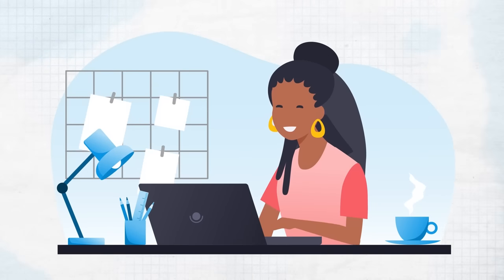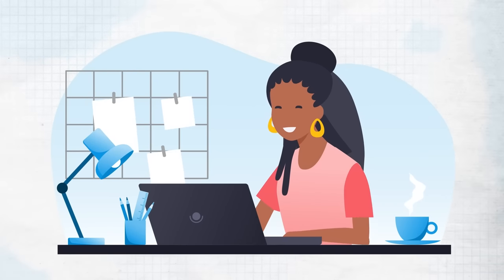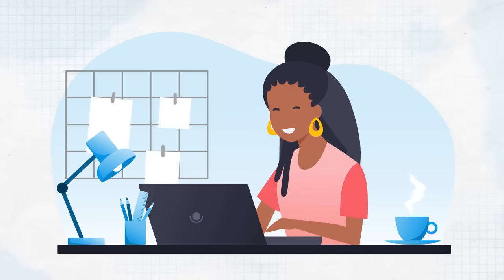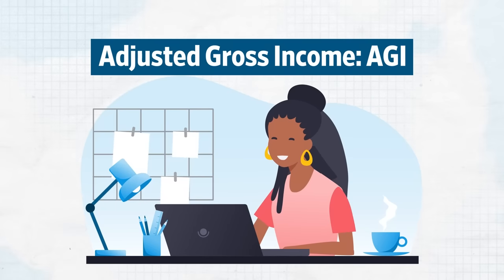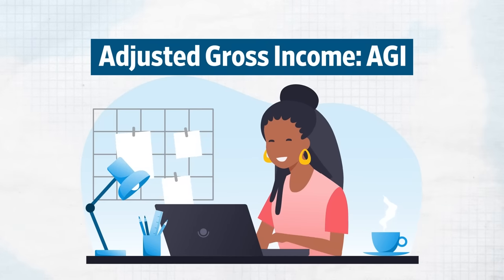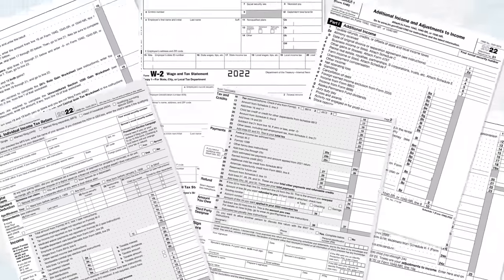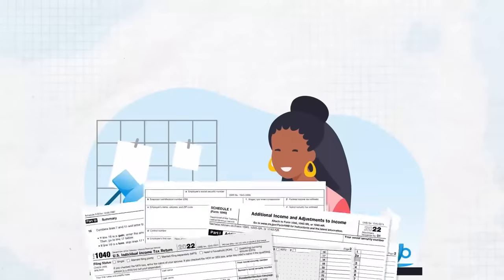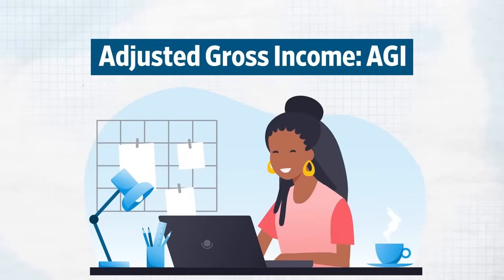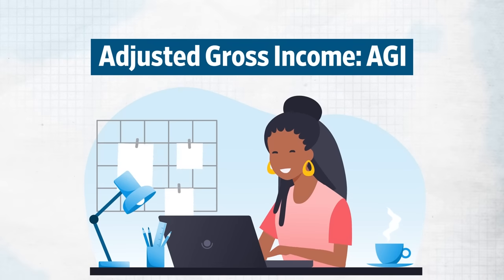If you're looking to save as much money as possible when filing your taxes this year, knowing this one number will help: your adjusted gross income, or AGI. Adjusted gross income is the starting point for your tax return. We break down how to calculate your AGI and how this one number impacts your finances.